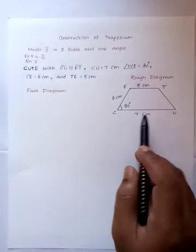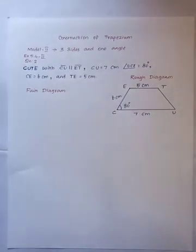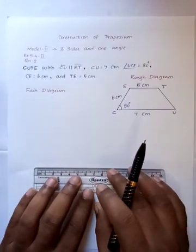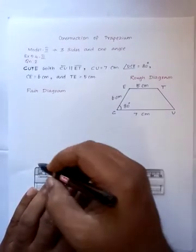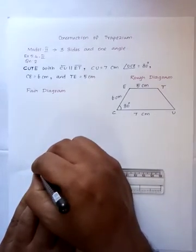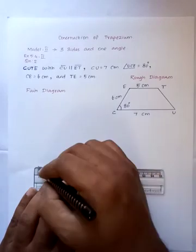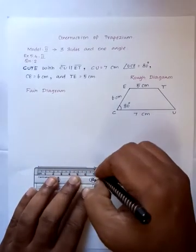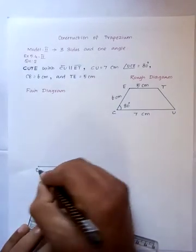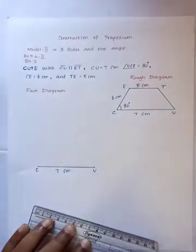First, we have to draw the base of the trapezium. CU equal to 7 cm. Starting point, fair diagram, starting point 7 cm, line segment drawn, point marked, line segment drawn. In CU, 7 cm.